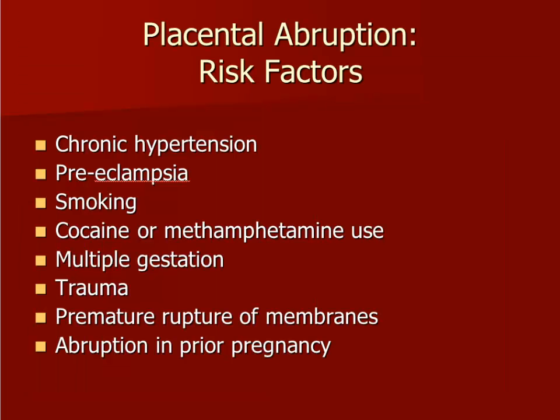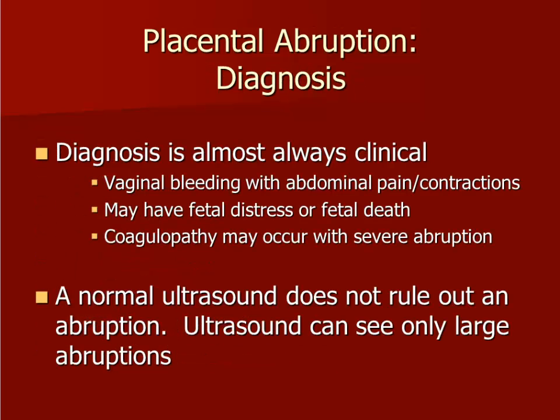Risk factors for placental abruption are listed here, the most common being the presence of hypertension. In contrast to the ultrasound diagnosis of a placenta previa, the diagnosis of a placental abruption is almost always clinical. Ultrasound may be normal during an abruption, so a high index of suspicion is necessary with third trimester patients who have abdominal pain, contractions, and vaginal bleeding, especially if the fetal heart rate shows decelerations.